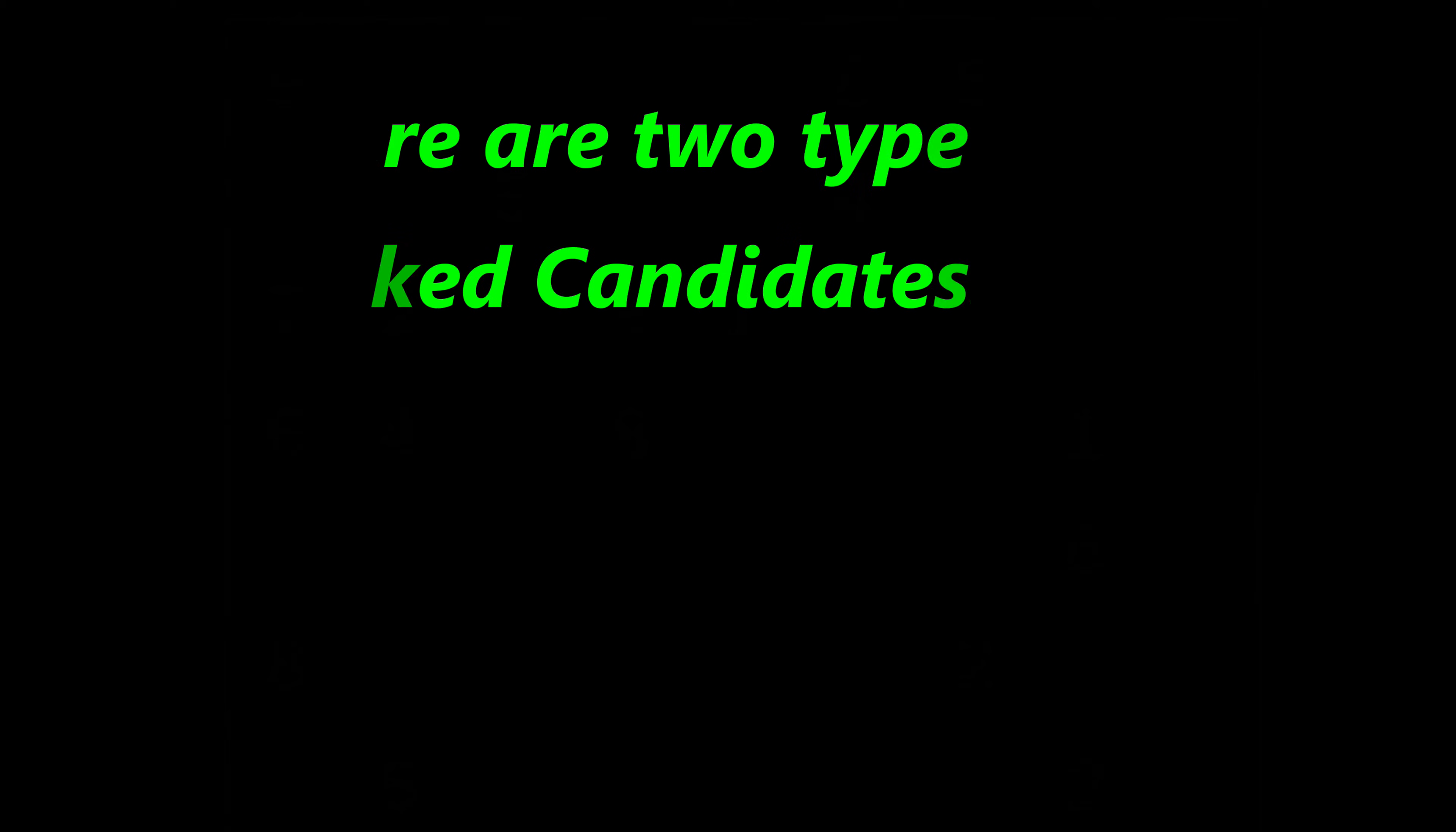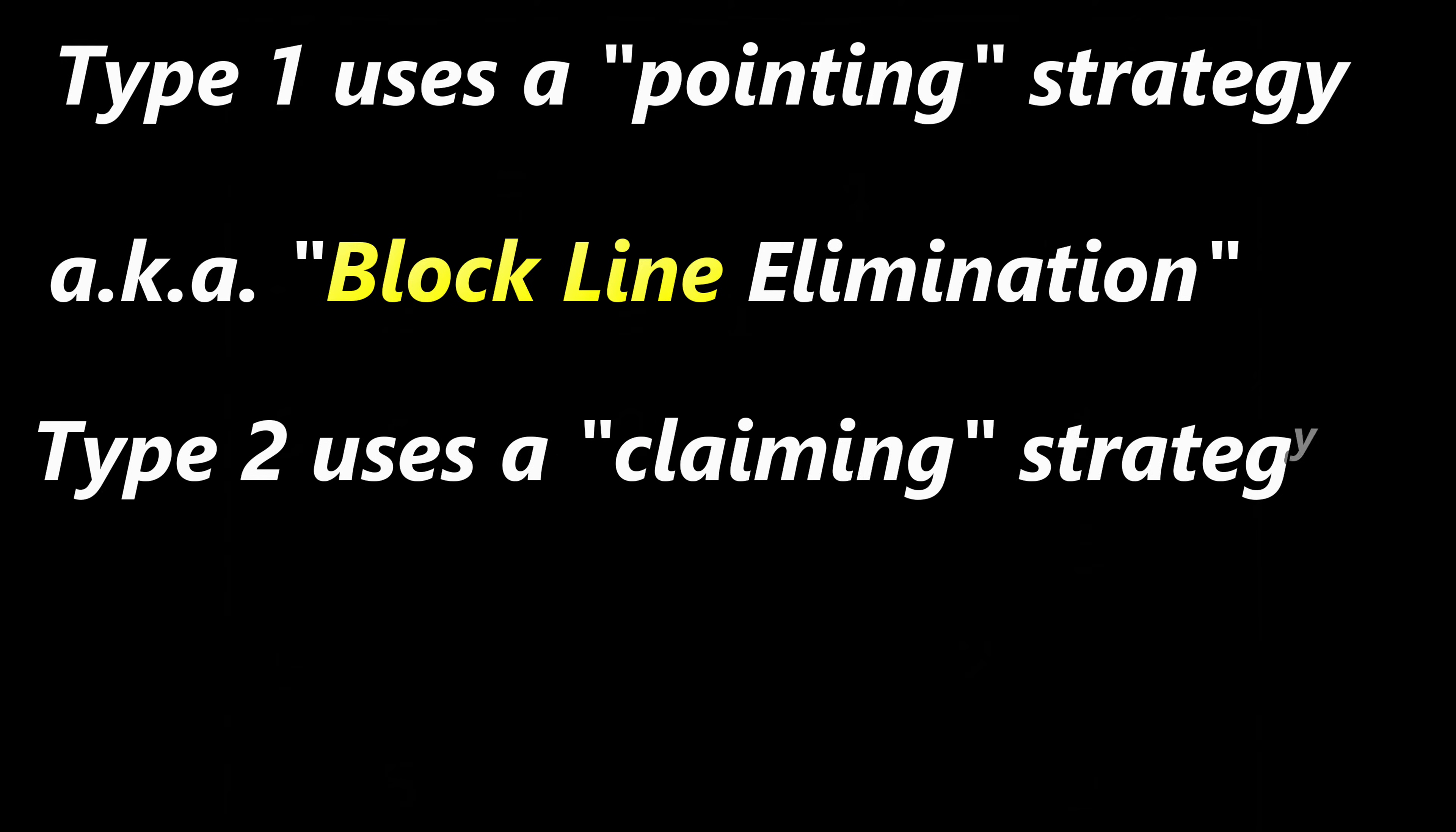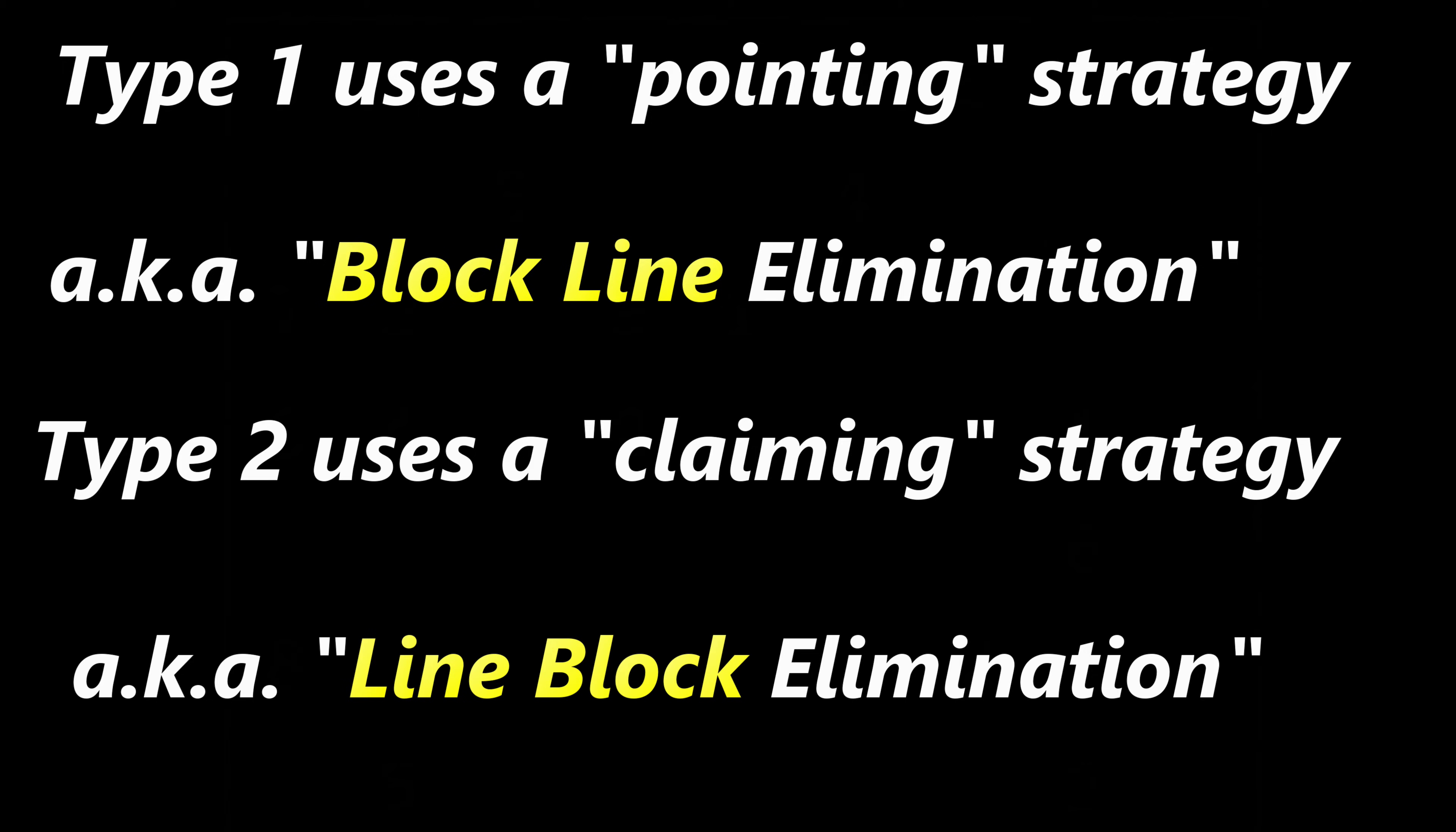There are two types of locked candidates, type 1 and type 2. Type 1 locked candidates use what is called a pointing strategy, also called block line elimination. Type 2 locked candidates use a claiming strategy, also known as line block elimination.